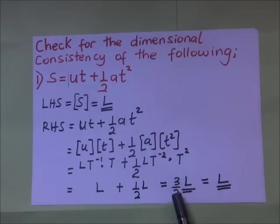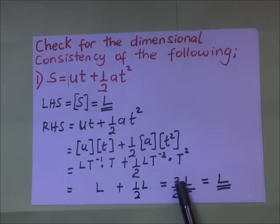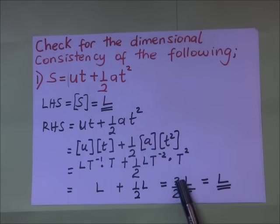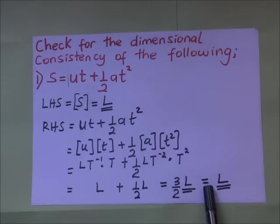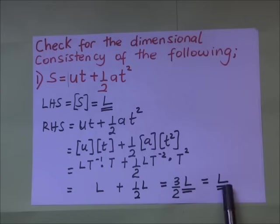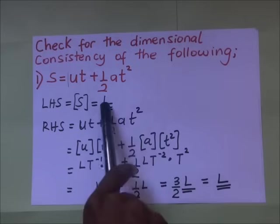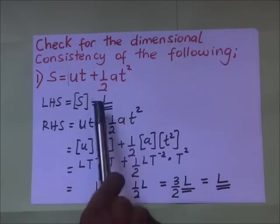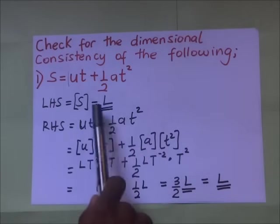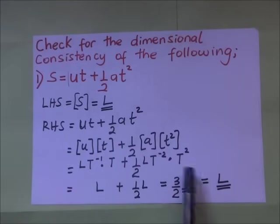The factor 3/2 is a constant, and as far as dimensions of a physical quantity are concerned, constants are dimensionless. So on the right-hand side we are left with just L. We realize that L on the left-hand side and L on the right-hand side coincide. Therefore we conclude that the equation s = ut + ½at² is dimensionally consistent.